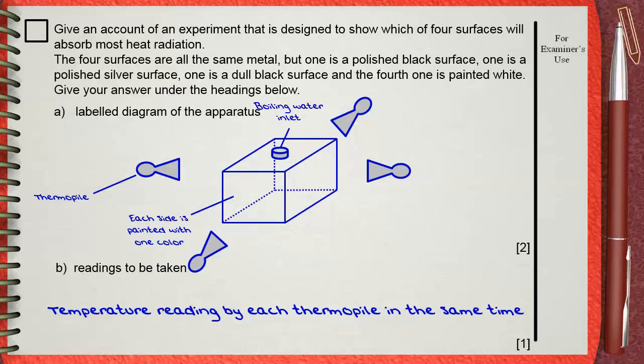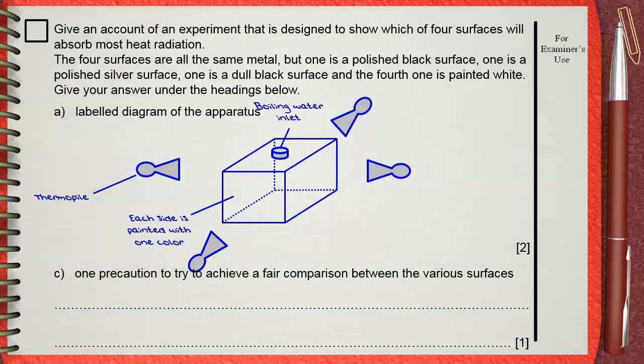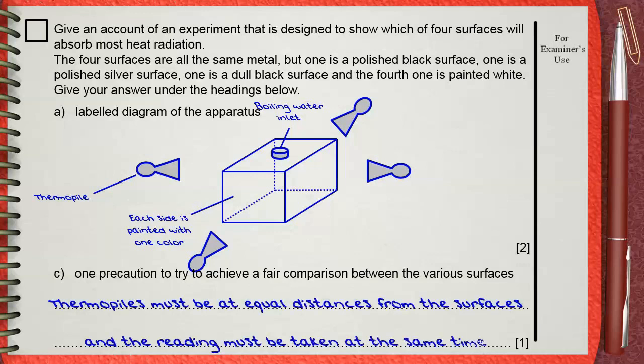Question C. Give one precaution to try to achieve a fair comparison between the various surfaces. For fair comparison, each thermopile must be at the same distance from the surface it is facing, so thermopiles must be at equal distances from the surfaces and the readings must be taken at the same time.